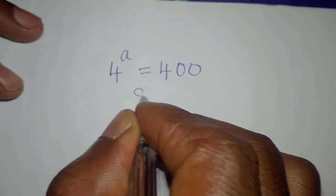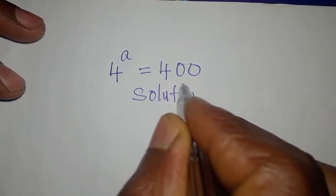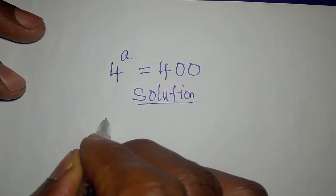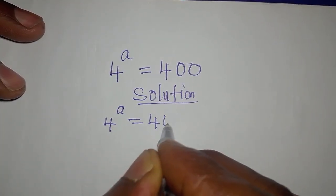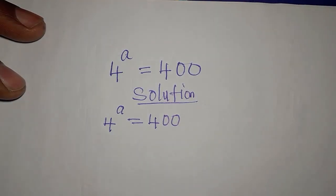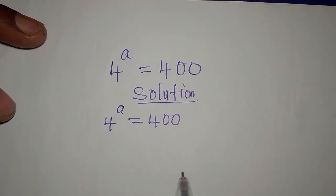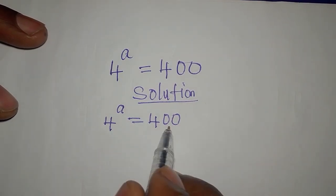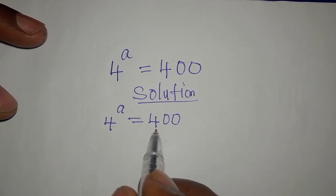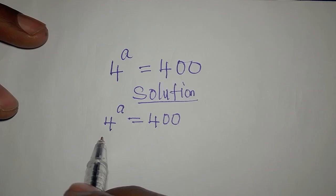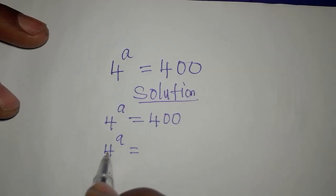Hi everyone, let's solve this. We have 4 to the power of a equals 400. We're going to solve this in detail, so stay back and watch. The question here is: can we express 400 in the base of 4? The answer is no, so let's break it down.